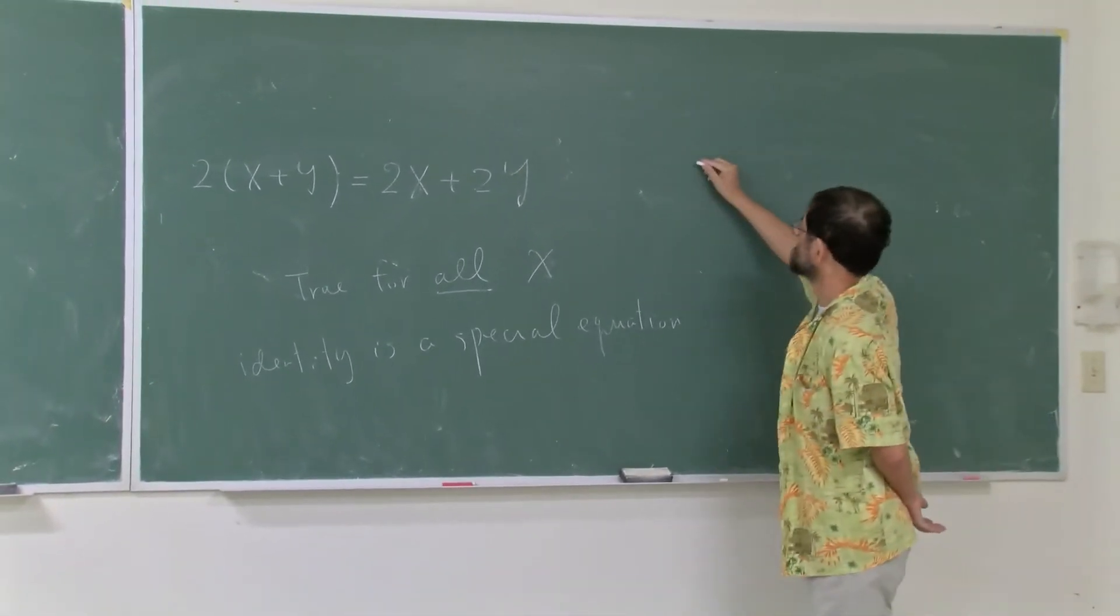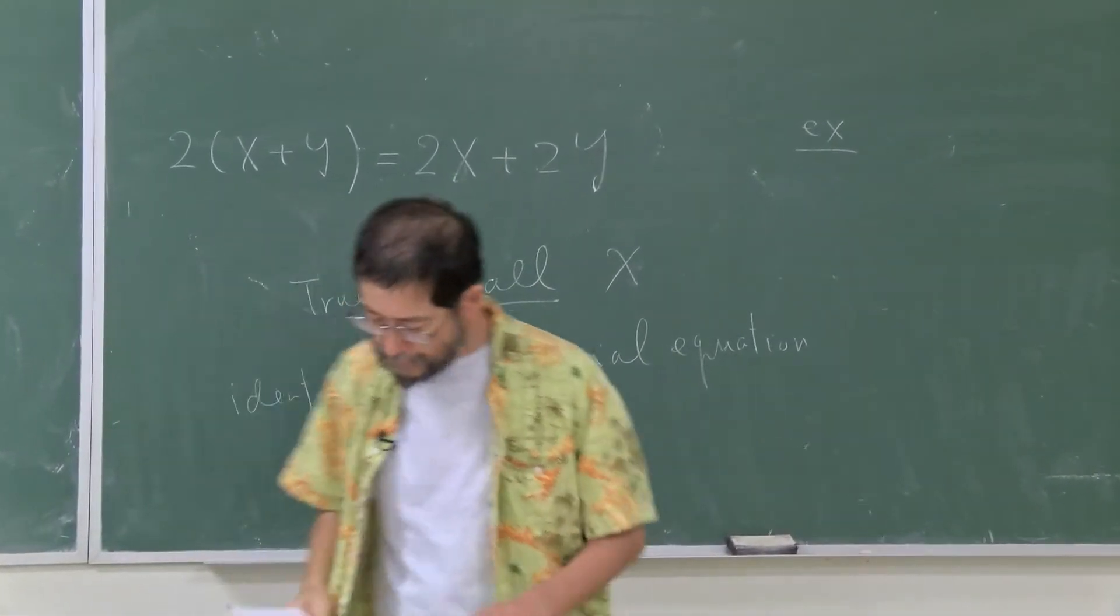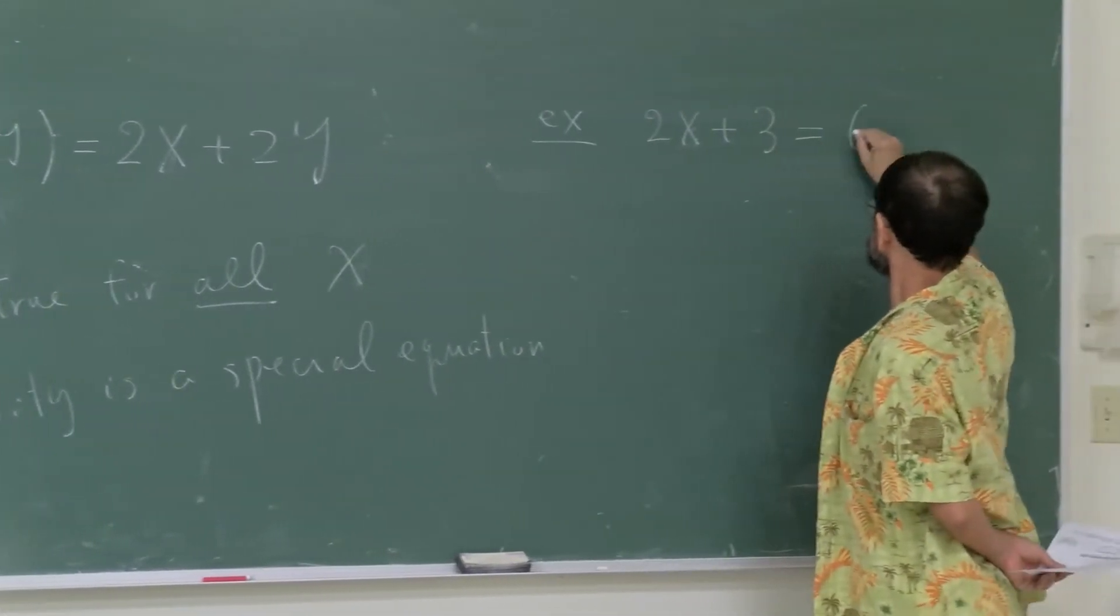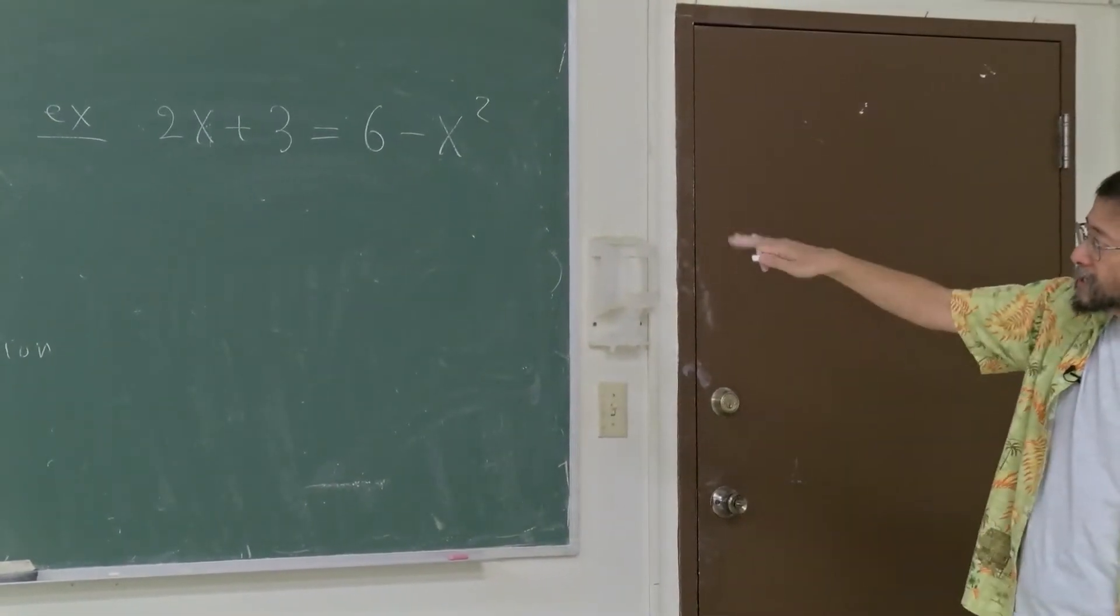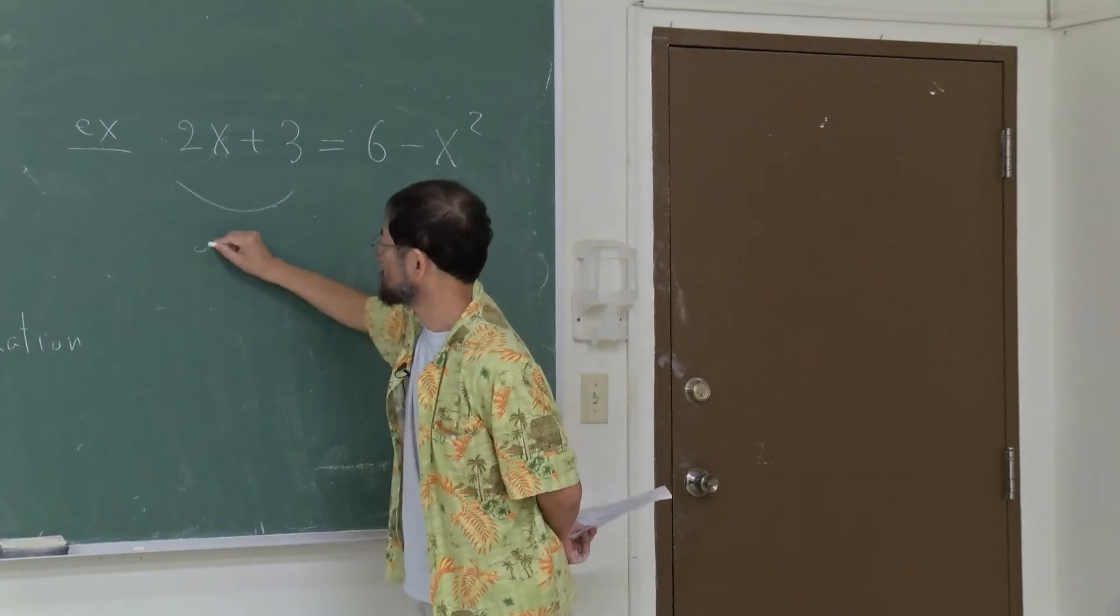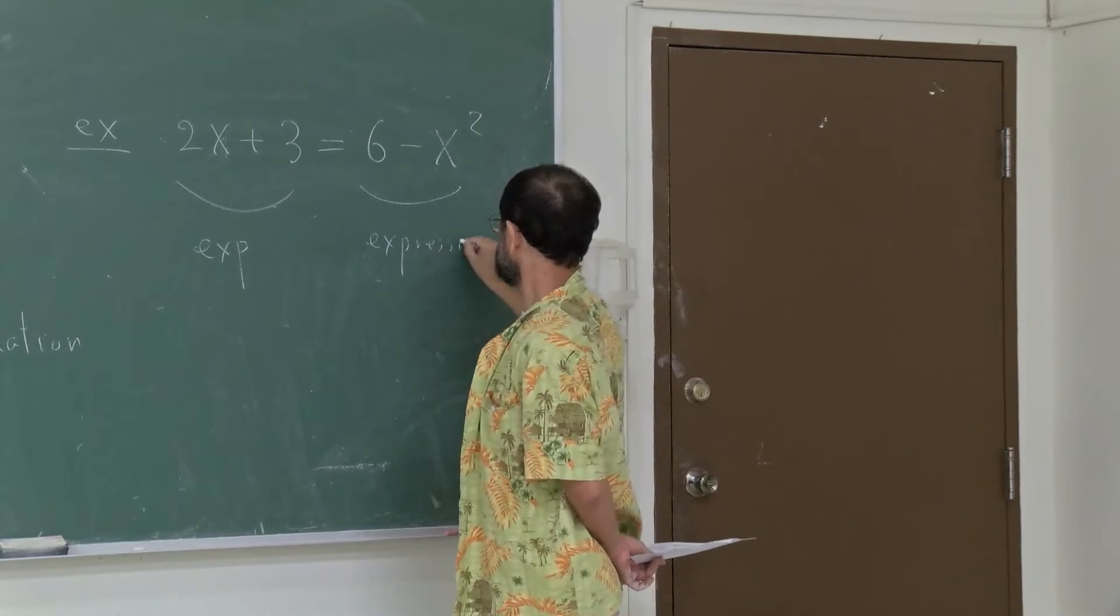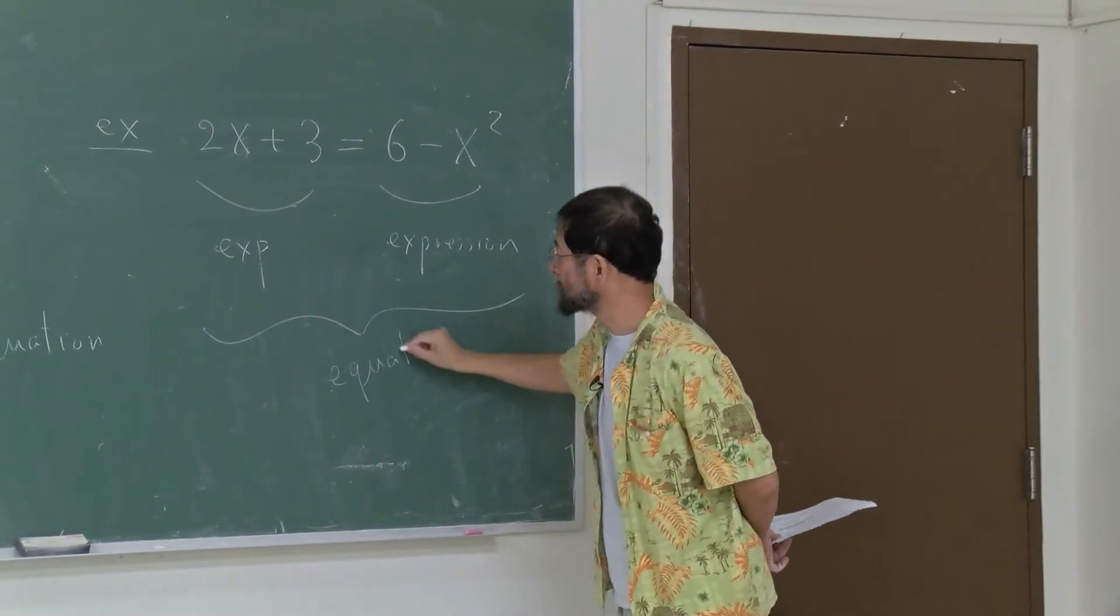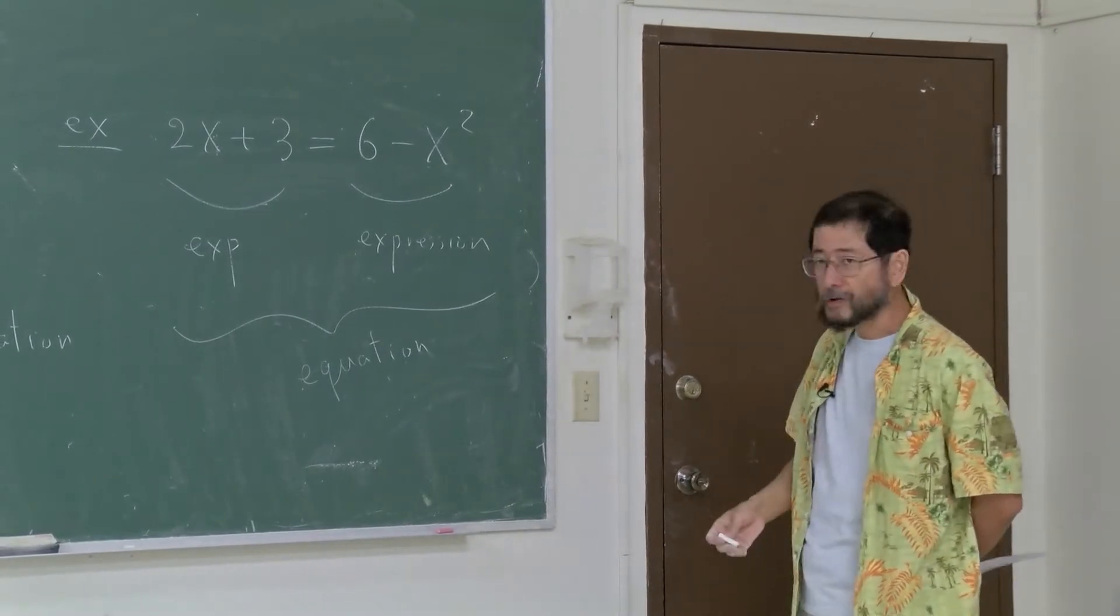So let's look at another example. For example, expression 2x plus 3 is equal to 6 minus x squared. So this is an expression, this is another expression. So together, this is an example of equation. But you can easily see that this is not an identity.